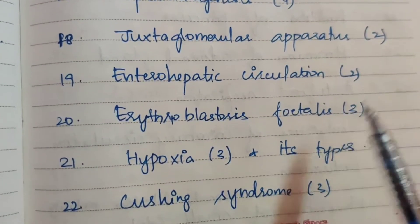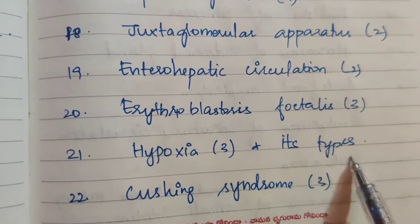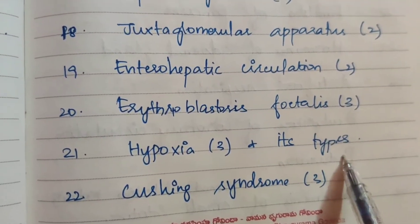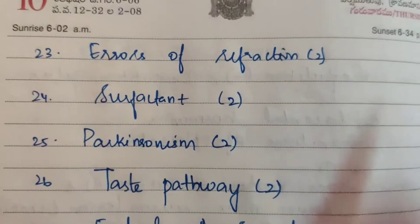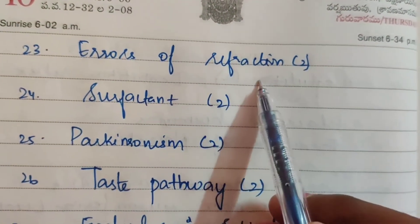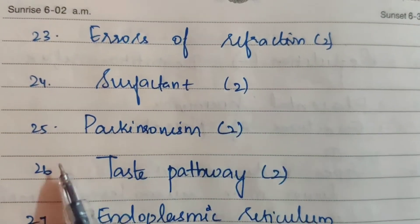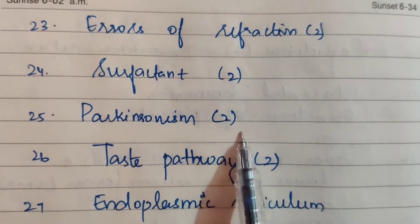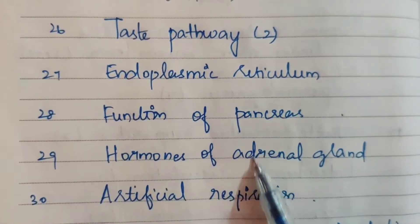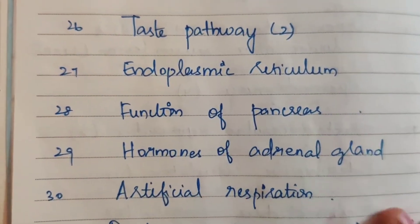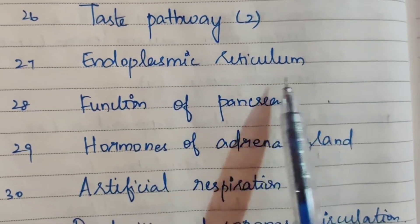Twentieth: erythroblastosis fetalis — three times. Twenty-first: hypoxia and its types — three times. Twenty-second: Cushing's syndrome — three times. Twenty-third: errors of refraction — two times. Twenty-fourth: surfactant — two times. Twenty-fifth: Parkinsonism — two times; taste pathway — two times.